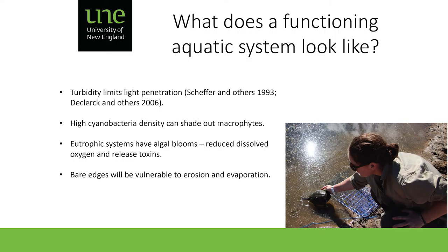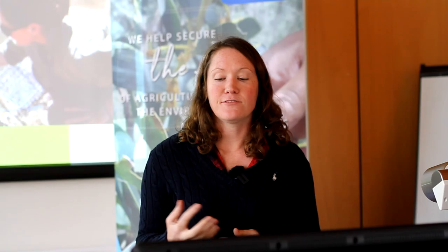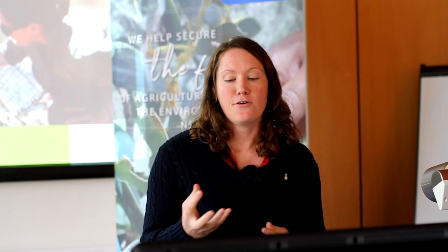Bare edges without vegetation are vulnerable to erosion and evaporation — nothing shades them or holds them in place — so storms and livestock disturbance release sediment and cause turbidity. Studies show emergent vegetation at the margin is correlated with more frog species, frog abundance, and macroinvertebrates. Graphically, as macrophyte cover increases, so does invertebrate family richness — lots of different bugs playing lots of different roles where there's vegetation to live in.